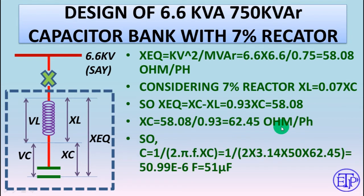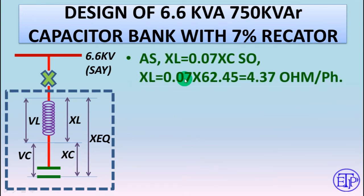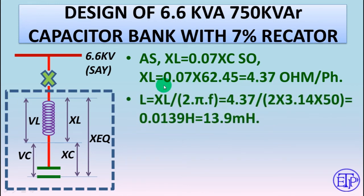For a 50 Hz system, the capacitance is 51 microfarads. XL equals 0.07 × XE = 4.37 ohms per phase. L equals XL / (2πf), which for a 50 Hz system gives 13.9 millihenry.